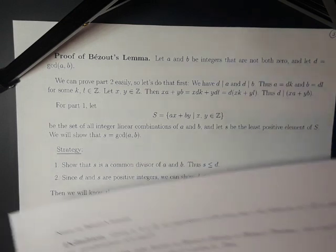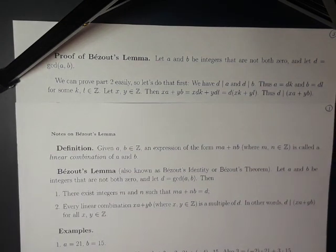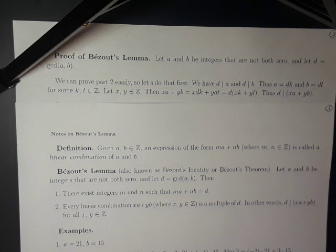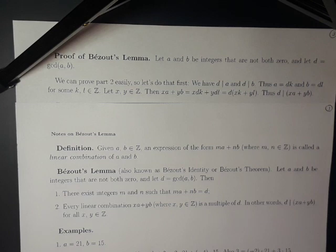Recall that part 2 of Bezout's lemma is that every linear combination is a multiple of the GCD. We know that d divides a and d divides b. Thus, a equals dk and b equals dl for some integers k and l. So let x and y be arbitrary integers. Then xa plus yb equals xdk plus ydl by substitution. Factoring out a d, we can see that d divides xa plus yb.